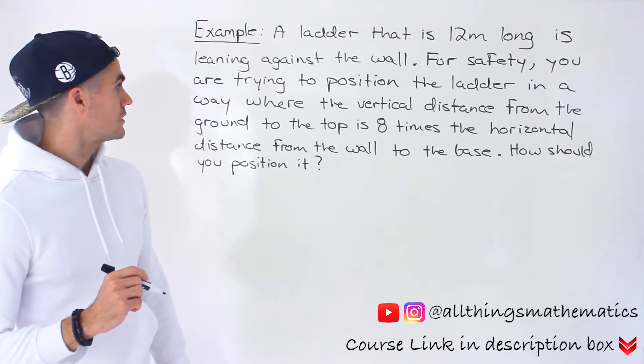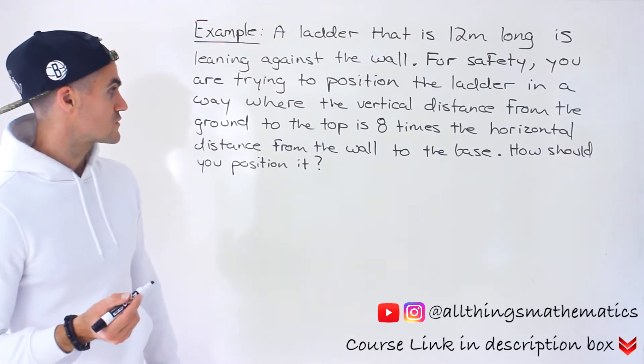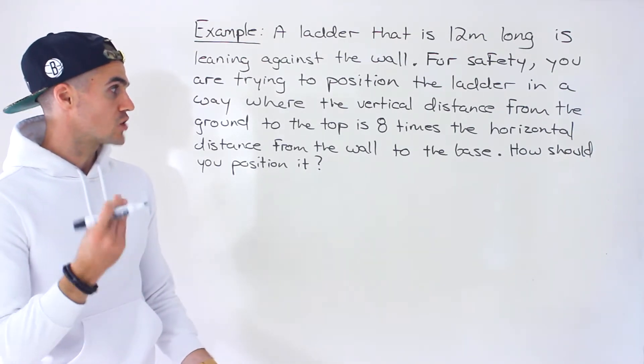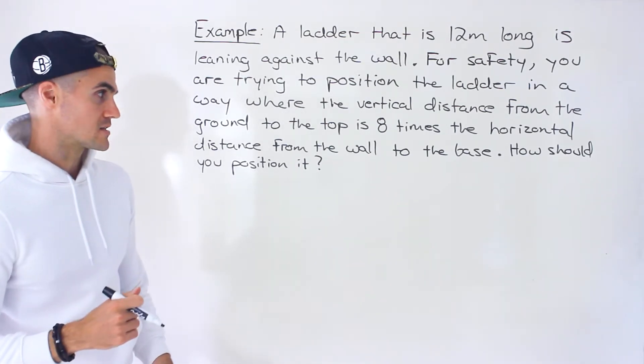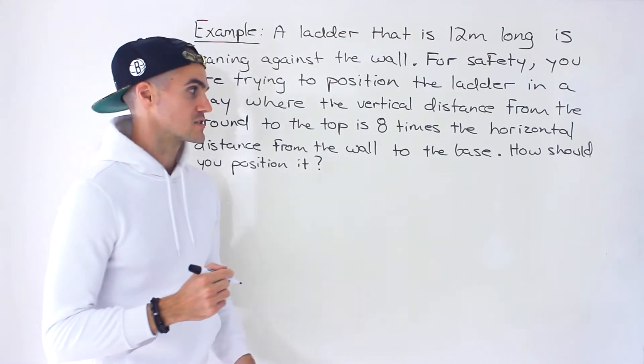For safety you are trying to position the ladder in a way where the vertical distance from the ground to the top of the ladder is eight times the horizontal distance from the wall to the base of the ladder. So how should you position it?